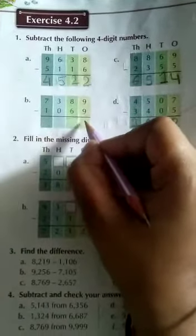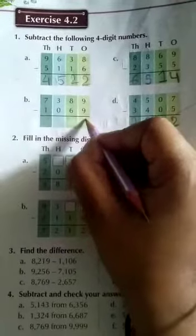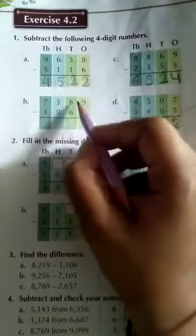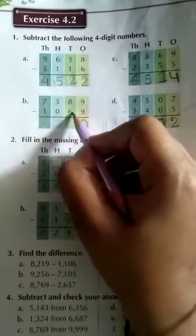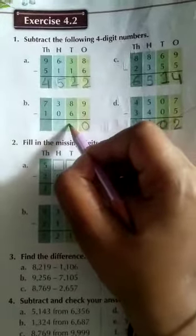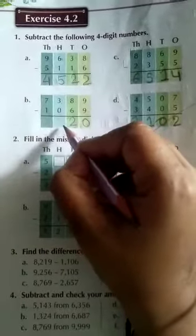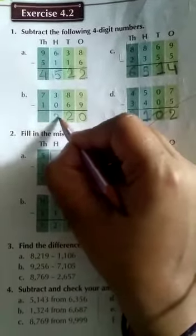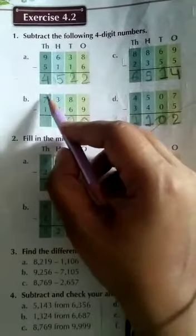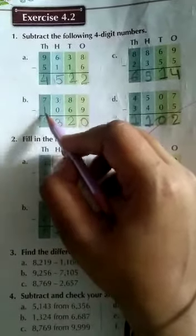Now come to number B, 9 minus 9, 9 minus 9 is how much students? It is 0. Here given 8, 8 minus 6 is? 8 minus 6 is 2. Then here given 3 and here given 0, so 3 minus 0 is? 3. And here in 1000s place given 7 minus 1, so 7 minus 1 is 6.